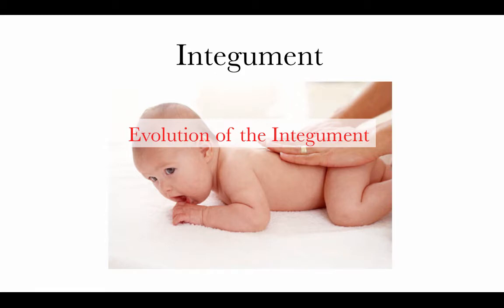The integument is going to have a number of different functions, some of them very obvious. It's the covering of the body, so it's a barrier between the body and its environment. It's going to play roles such as protecting the body from abrasion or other kinds of damage, from microbial invasions and pathogens, and from UV sunlight.